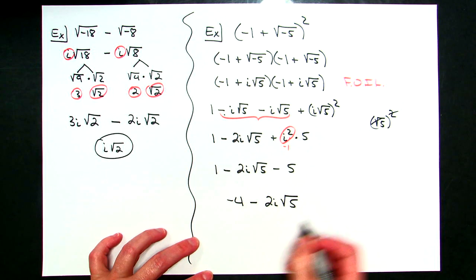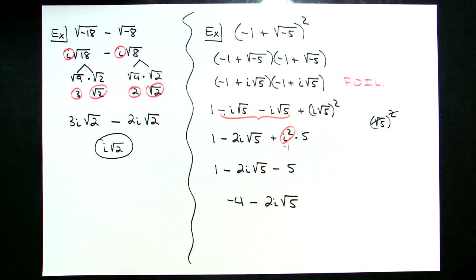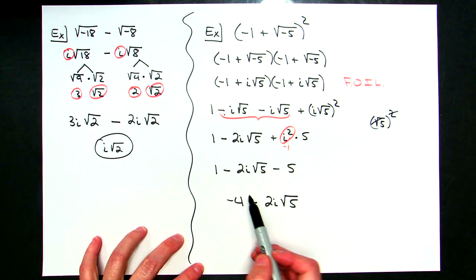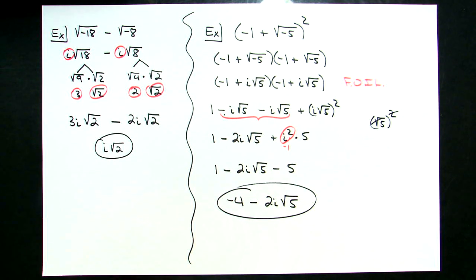That's in standard form, so I can leave the answer as -4 - 2i√5. Just a few examples of how you would deal with a negative underneath a square root. Thank you.